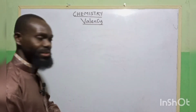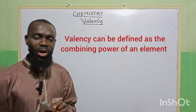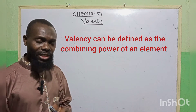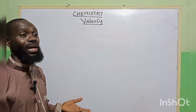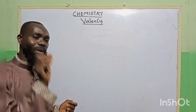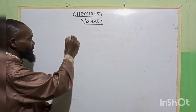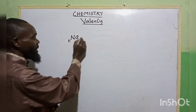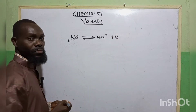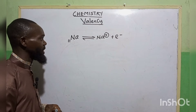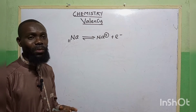Now let's look at valency. What is valency? Valency can be defined as the combining power of an element. Valency is synonymous with the oxidation number of any element, and refers to the number of charges possessed by that particular element. As we said, sodium with an atomic number of 11 loses one electron to form the sodium ion with a charge of plus one. So this plus one is called the valency of sodium, and it can also be referred to as the oxidation number of sodium.